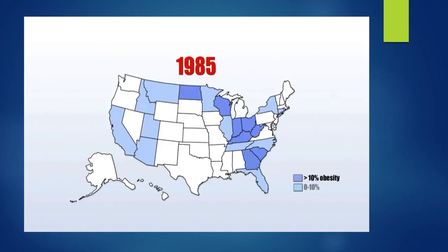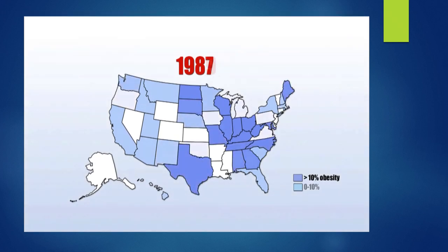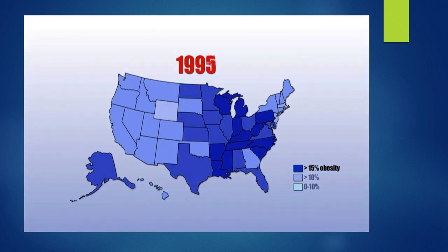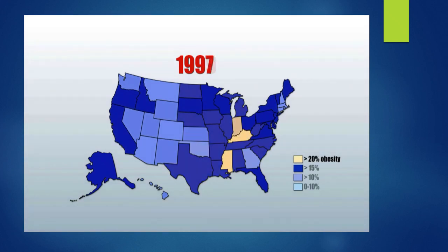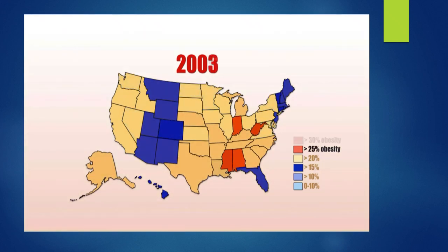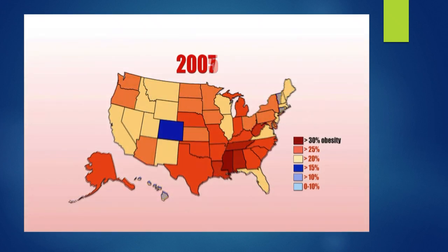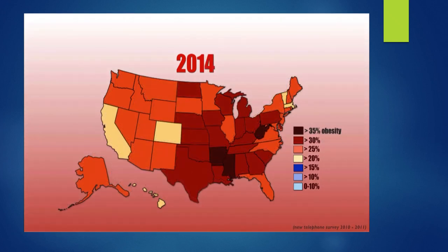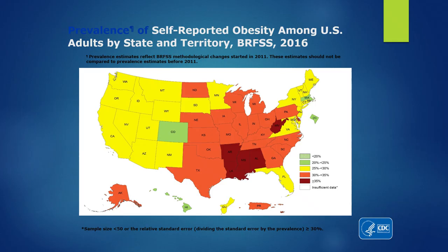I remember when my father visited me in New York City. I was doing my residency at the time — it was his first time to visit me from the Philippines. While we were in Manhattan at Macy's shopping, he quietly whispered to my ear and asked, why are there so many people with obesity here? I told him, Dad, this is the US, don't be surprised. That was in 1998. Look at where we are now — the maps show deeper colors indicating higher obesity prevalence, with the southern United States at 35% to 40%.